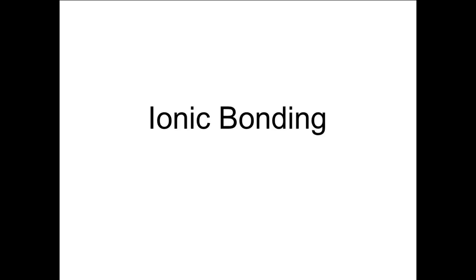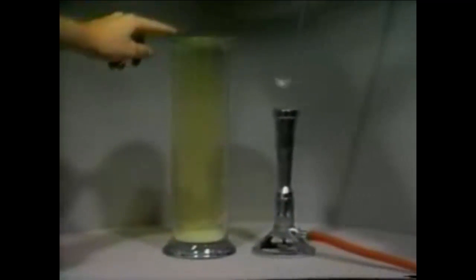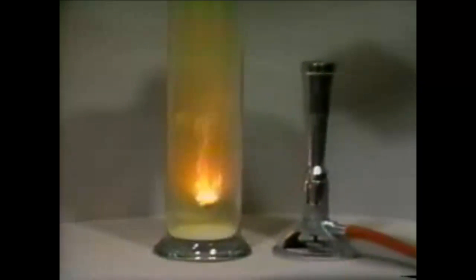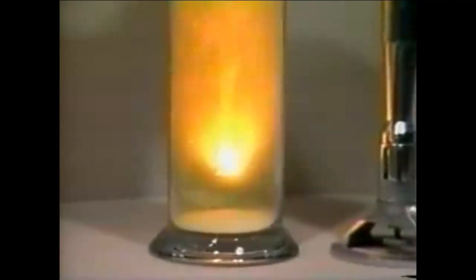An ionic bond is the first type. It is the transfer of electrons from one atom to another. Sodium metal is heated until it melts and just begins to burn, then it is immersed into the yellow-green chlorine gas. The sodium begins to burn in chlorine with an intense yellow flame. We are observing the exothermic reaction of sodium metal with chlorine gas, producing the white solid sodium chloride.